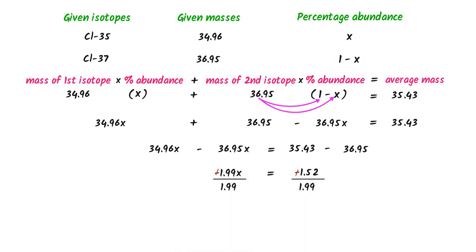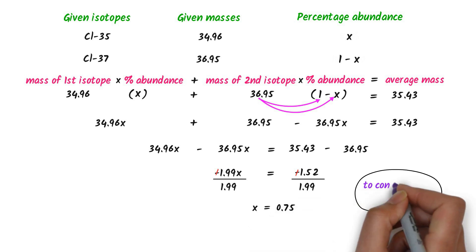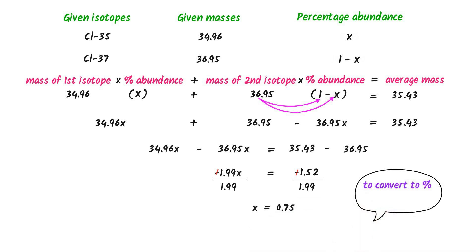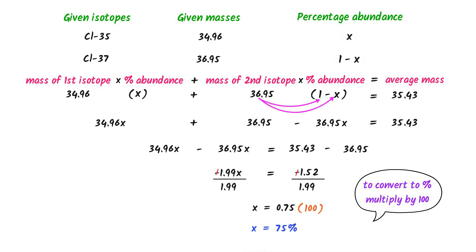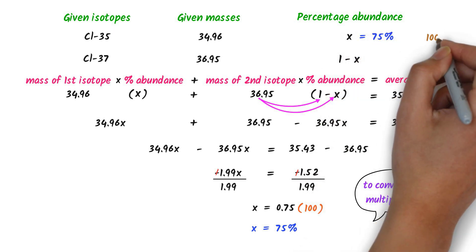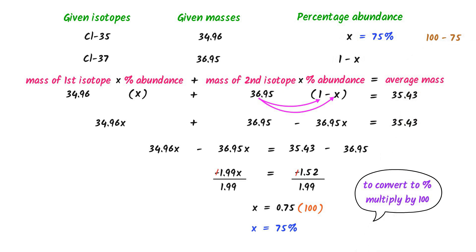I get X equals 0.75. To convert this to a percentage, I multiply by 100. I get X equals 75%. So the percentage abundance of Chlorine-35 is 75%. Secondly, 100 minus 75 equals 25%, which is the percentage abundance of Chlorine-37.